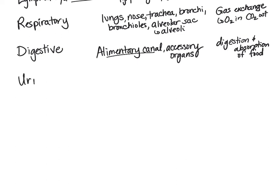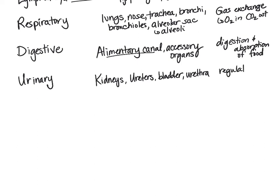Next we'll look at the urinary system, composed of the kidneys — which do the bulk of the work — the ureters, the urinary bladder, and the urethra. The function of the urinary system is regulation of the body's internal environment by getting rid of wastes via the production and excretion of urine.